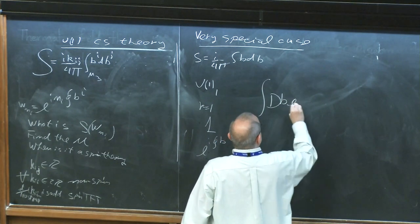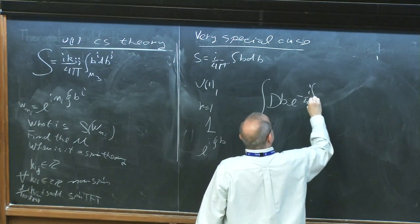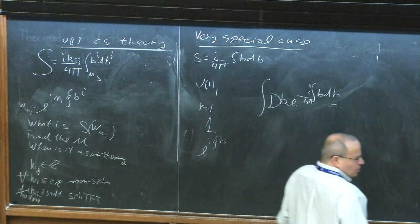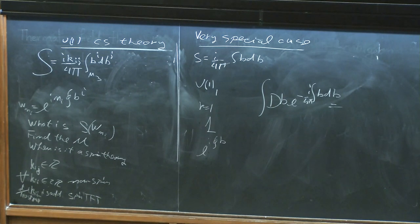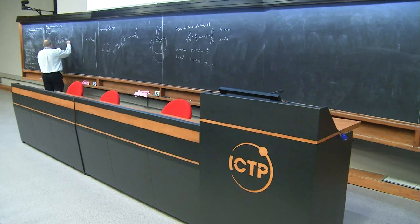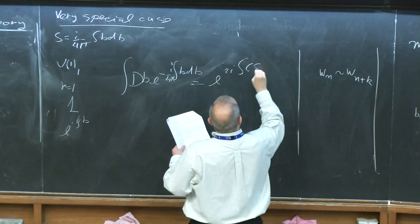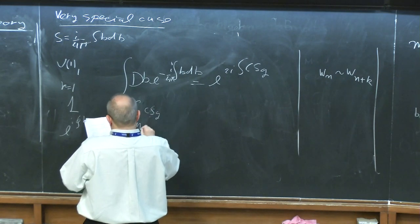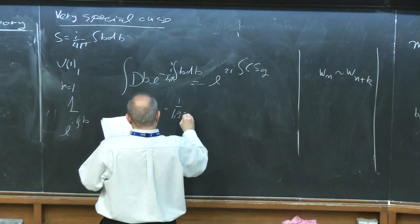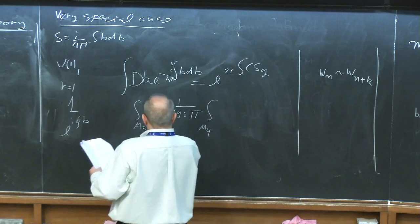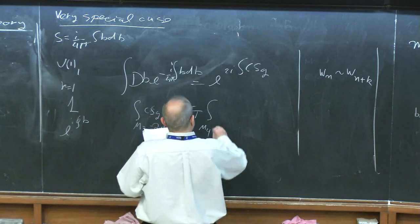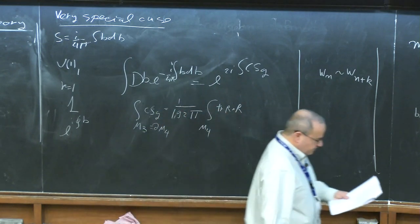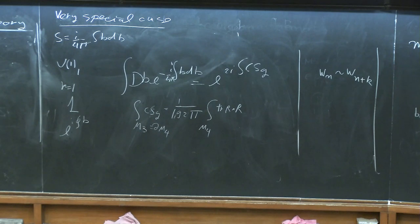We can write a closed-form formula for the partition function on any manifold. The functional integral ∫DB e^{i/4π ∫BdB} equals e^{2i·CS_grav(M3)}, where the gravitational Chern-Simons term is defined as (1/192π) ∫_{M4} Tr(R∧R) for a 4-manifold whose boundary is M3. This theory is almost completely trivial — the partition function depends only on the metric. This is an example of duality: the quantum field theory in B is dual to a classical gravitational Chern-Simons term.